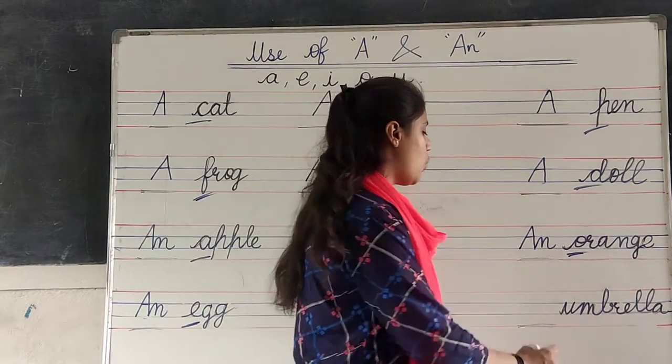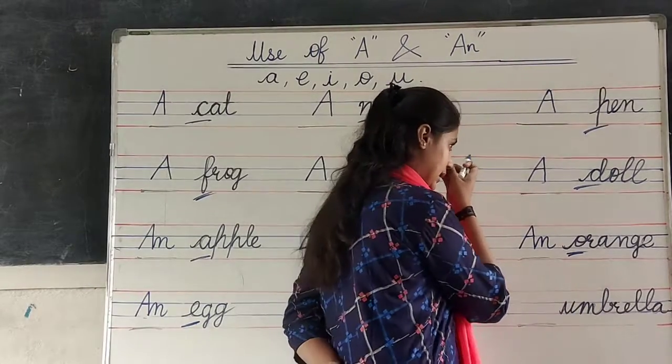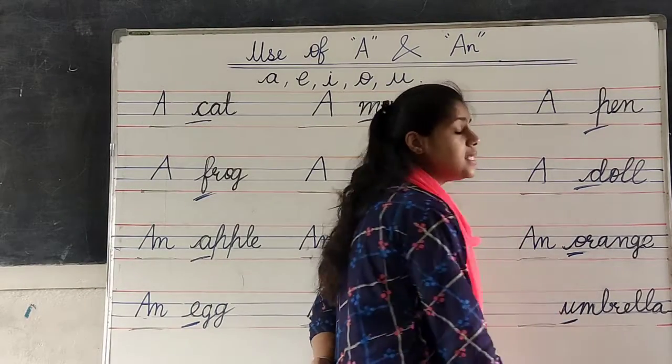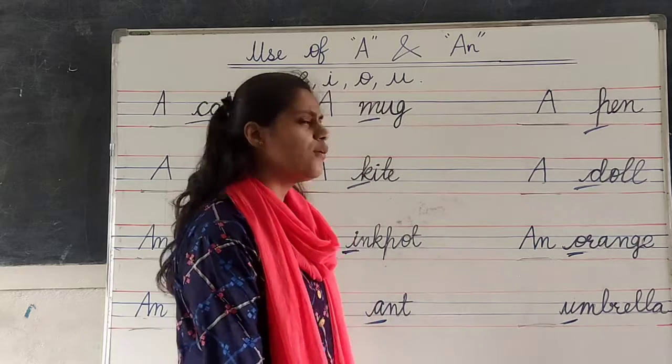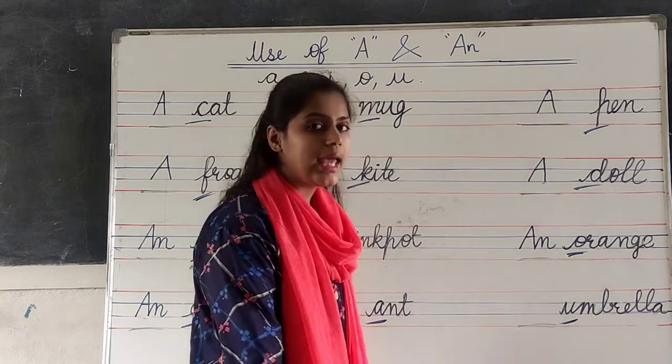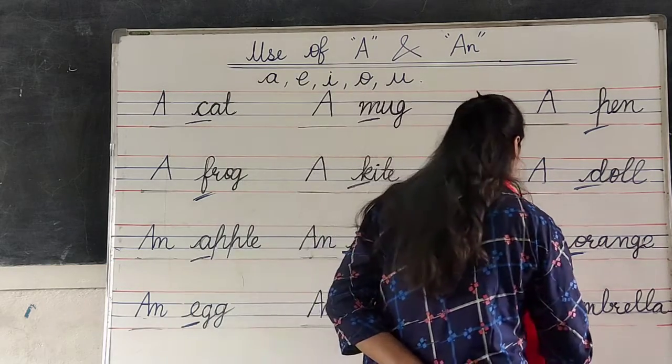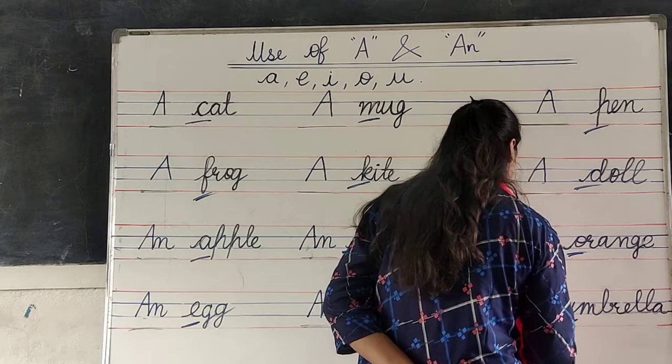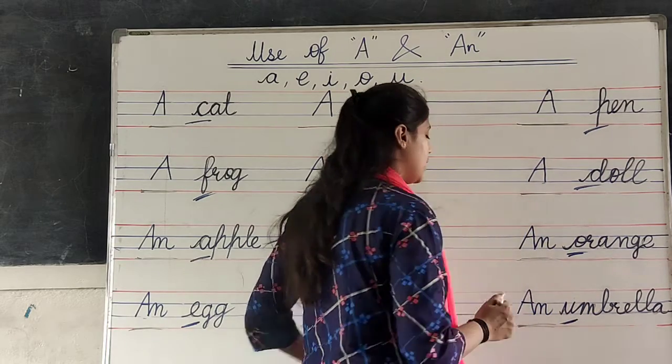Umbrella. U. U, M, B, R, E, L, L, A. Okay? Now, first letter is U. Then we have to write An. Because, U is a vowel. Okay?